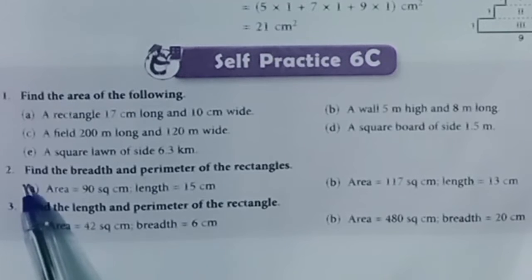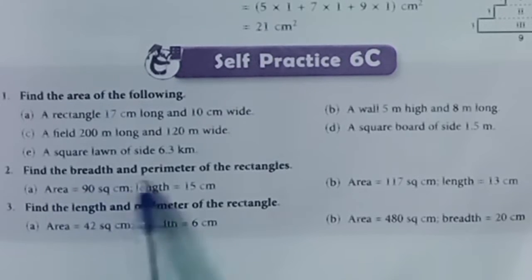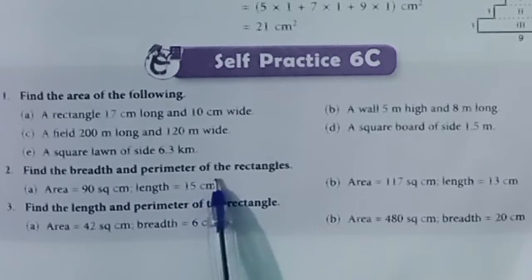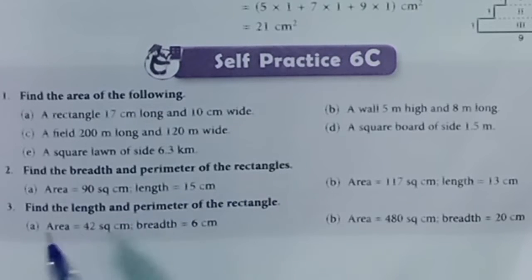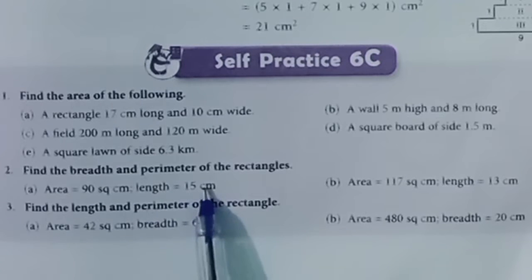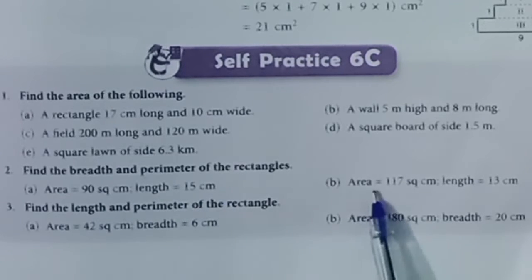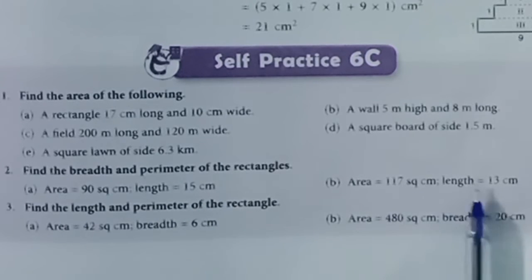Question 2. Find the breadth and perimeter of the rectangles. Part A: Area = 90, length = 15. Part B: Area = 117, length = 13.